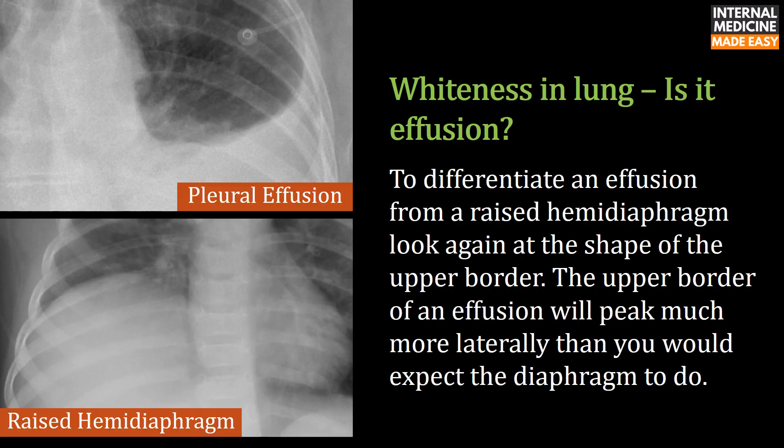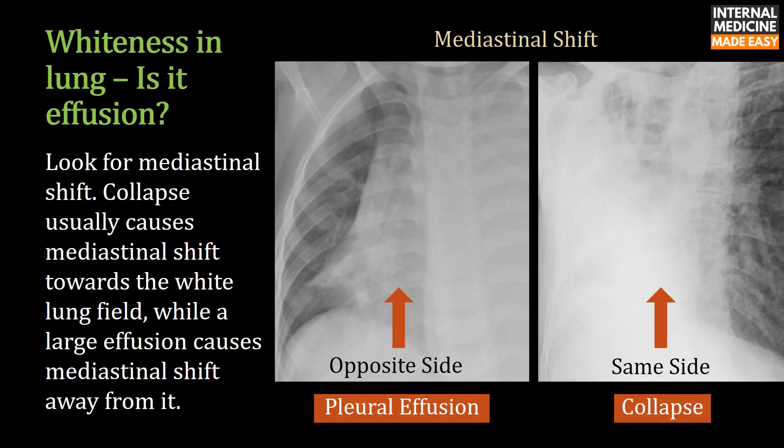To differentiate an effusion from a raised hemidiaphragm, look again at the shape of the upper border — the upper border of an effusion will peak much more laterally than you would expect the diaphragm to do. Also look for mediastinal shift: collapse usually causes mediastinal shift towards the white lung field, while a large effusion causes mediastinal shift away from it.